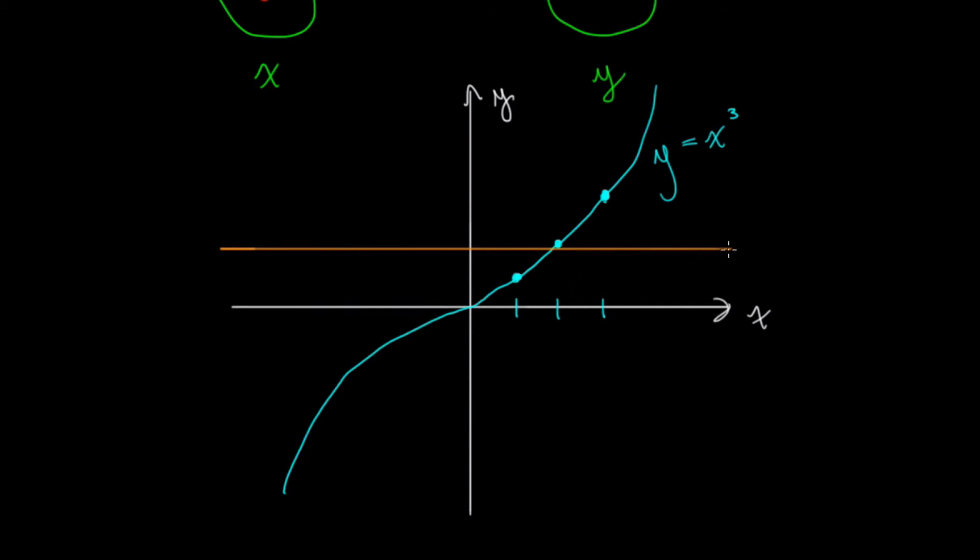If you draw an arbitrary horizontal line anywhere on the graph of a function, and if that horizontal line only intersects the graph of the function at one point and one point only, then it passes the horizontal line test and it is one-to-one. So the graph of y equals x cubed is one-to-one because it passes the horizontal line test.